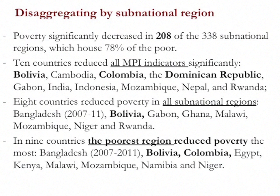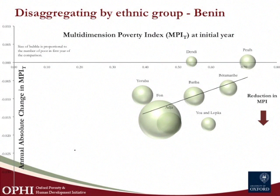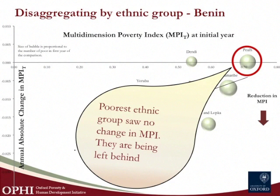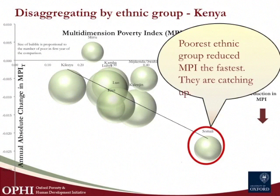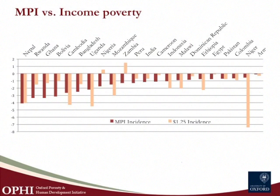So far I've only decomposed poverty by region. But we might want to break it down by other groups: ethnicity or caste, religious group, rural-urban, or household composition. In the case of Benin, each ball represents an ethnic group. The axis shows initial MPI — it's a race to the bottom. In this case, it was the least poor ethnic groups that reduced poverty the most — a disequalizing trend, perhaps creating social tensions. If we move to Kenya, happily we see the other story: the Somali group, the poorest, reduced MPI the fastest, catching up with the other groups.